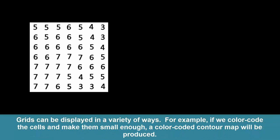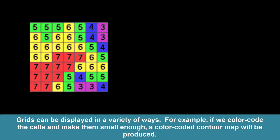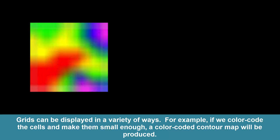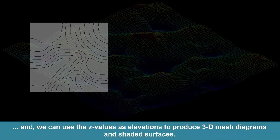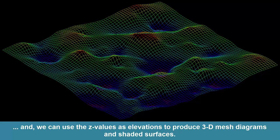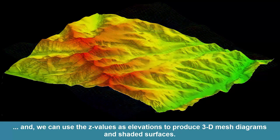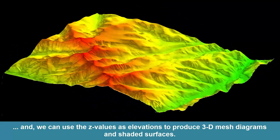Grids can be displayed in a variety of ways. For example, if we color-code the cells and make them small enough, a color-coded contour map will be produced. We can draw lines around similar cells to produce contour maps, and we can use the z values as elevations to produce 3D mesh diagrams and shaded surfaces.